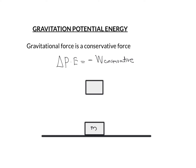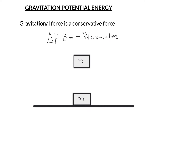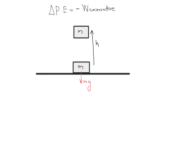We consider an object of mass m which is initially on the surface of the earth. Gravity exerts a force on it — the weight of this object, mg — and we displace this object in the vertically upward direction by a distance h. We can find the value of work done by gravitational force. Work done by this conservative force equals F × S × cos θ.